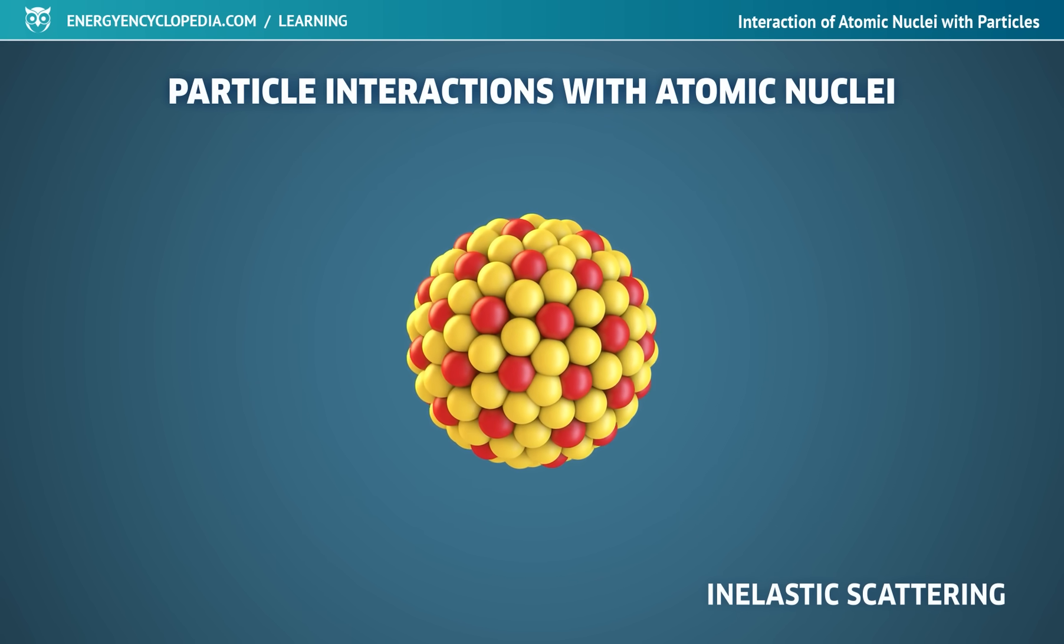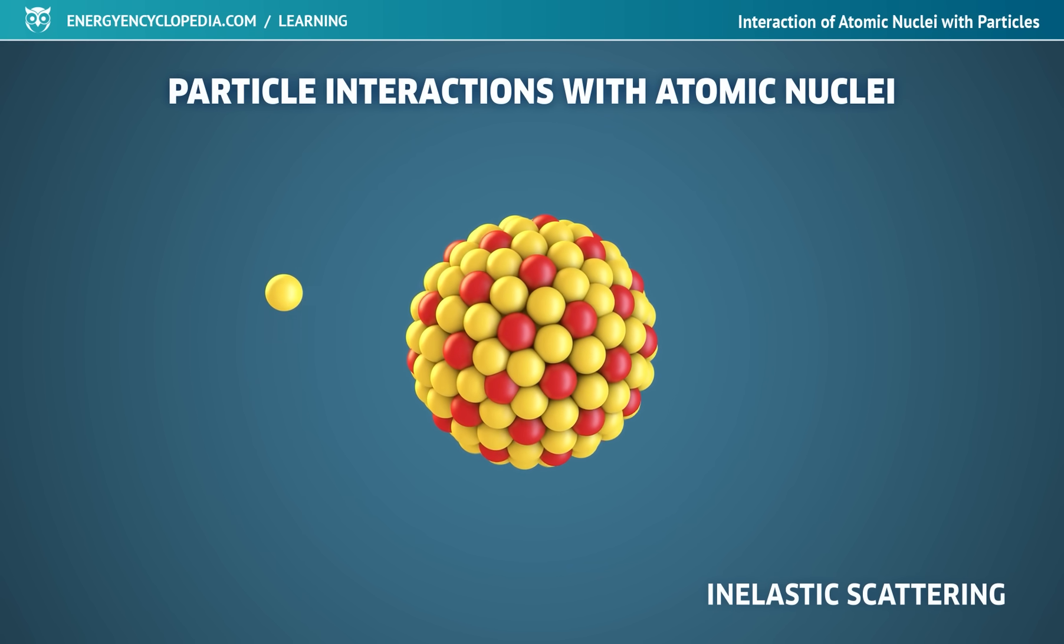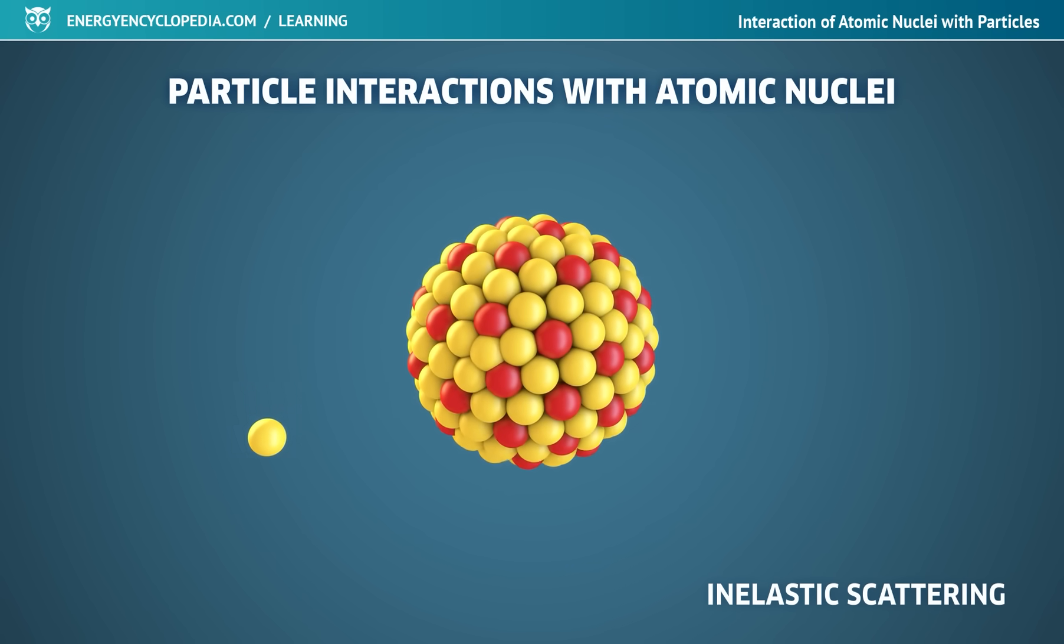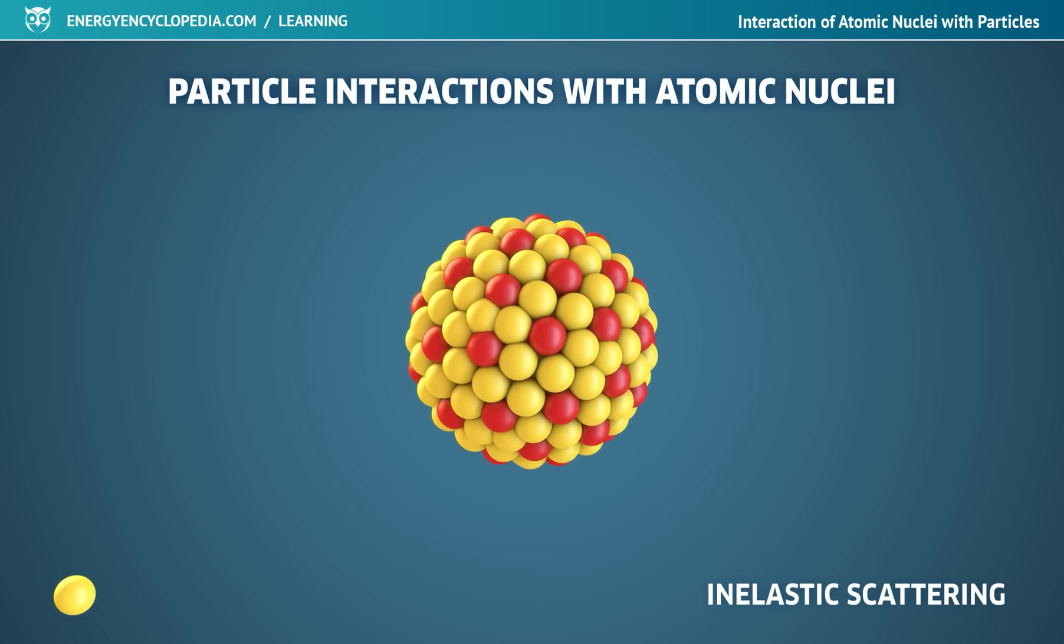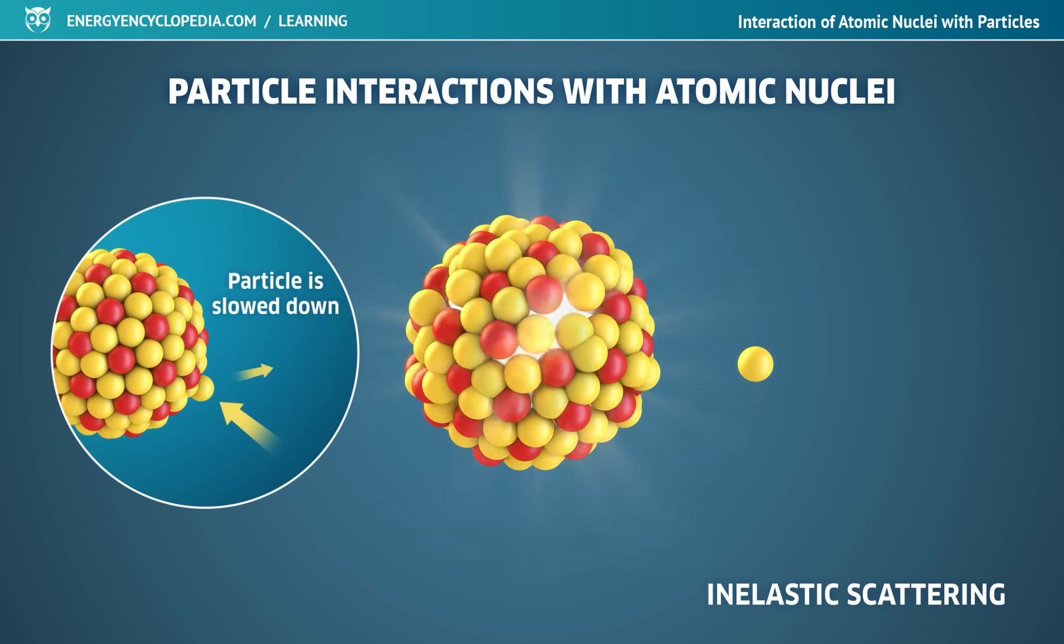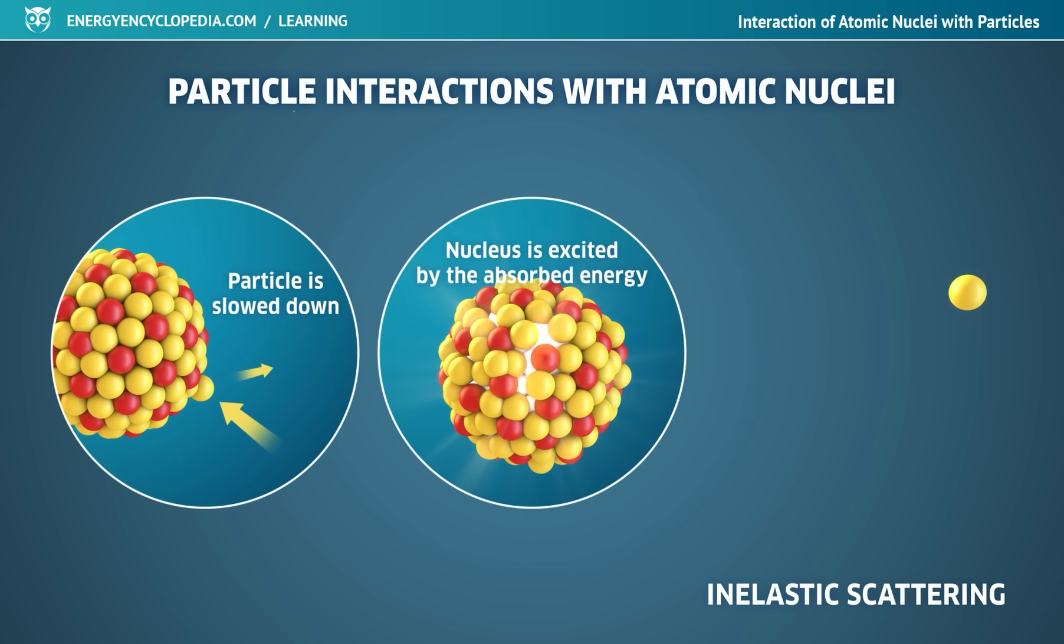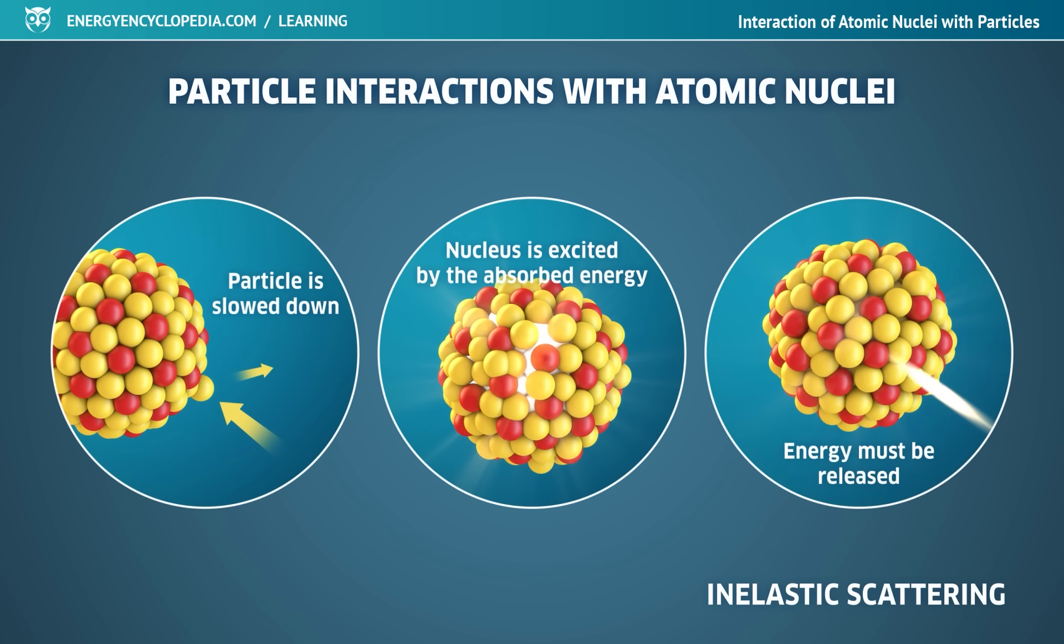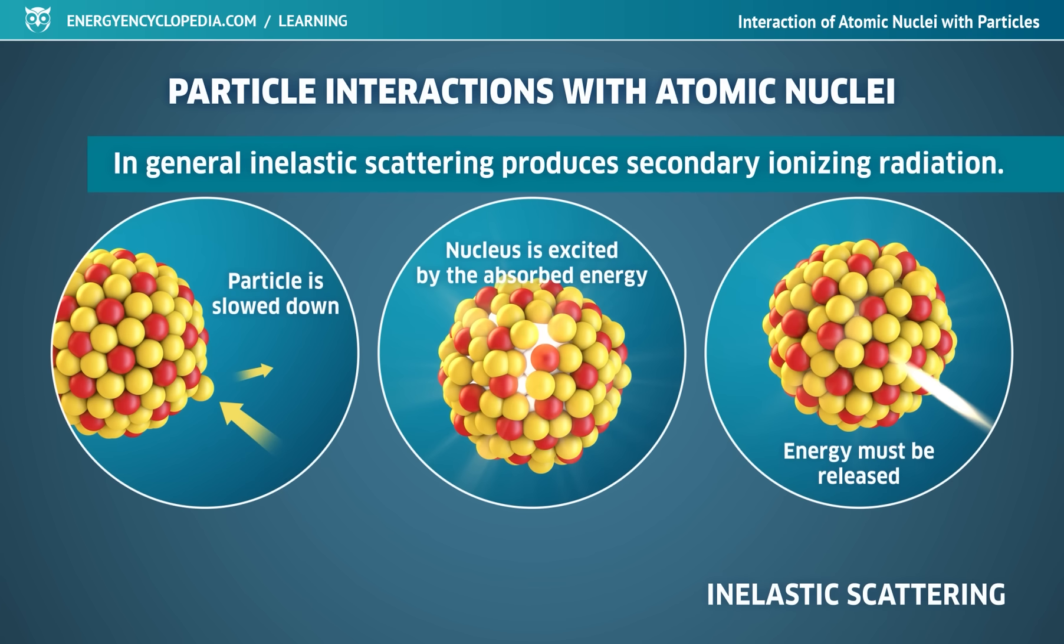In inelastic scattering, some of the particle's kinetic energy is transformed into other types of energy after the collision with the nucleus. The particle is noticeably slowed down. The nucleus is excited by the absorbed energy and must release it by emission of a photon or possibly by some other change. In general, inelastic scattering produces secondary ionizing radiation and if the amount of energy transferred is large enough, inelastic scattering can be accompanied by a nuclear reaction.